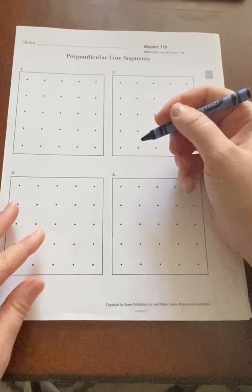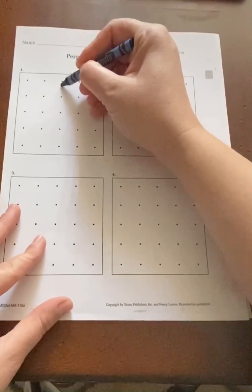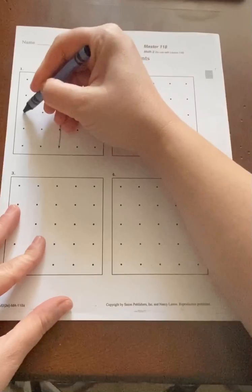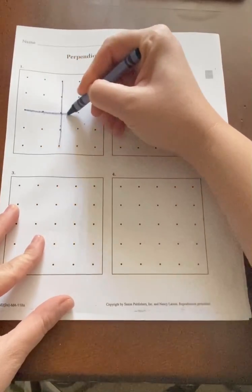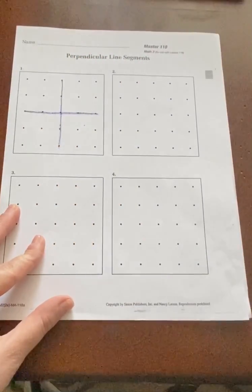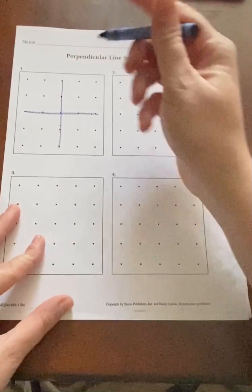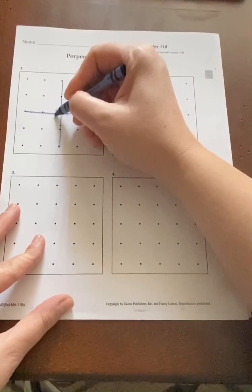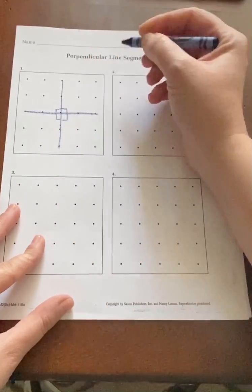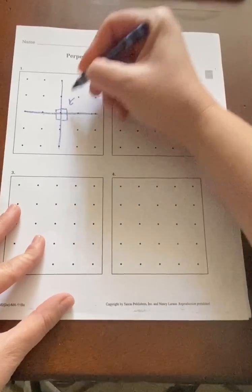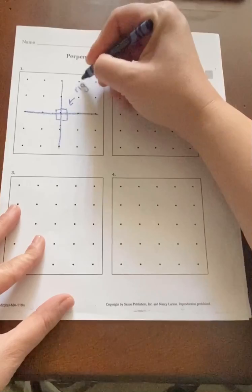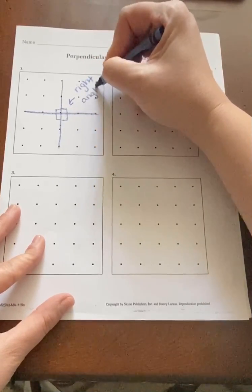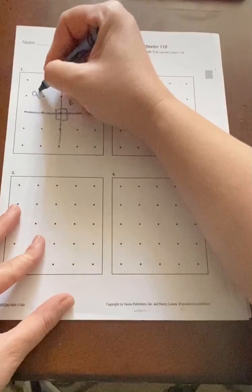Now I'm gonna go ahead and do the first one. So a perpendicular line, I'm using a blue crayon today, looks something like this. And like I said, where they meet, I'm gonna draw my little boxes, are all right angles. Right angles and 90 degrees.